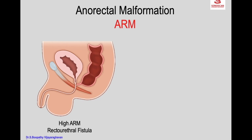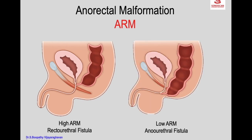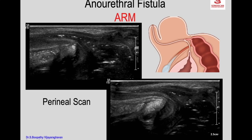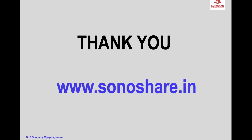Anorectal malformation can also present with urethral anomalies. High-type anorectal malformation can present with a recto-urethral fistula, and low-type with an anorectal fistula. On perineal ultrasound scan, in a case of low anorectal malformation, the dilated rectum shows no continuity with the anal canal but gas bubbles are seen outlining a tract extending from the anal canal to the perineal urethra — confirming anorectal fistula.